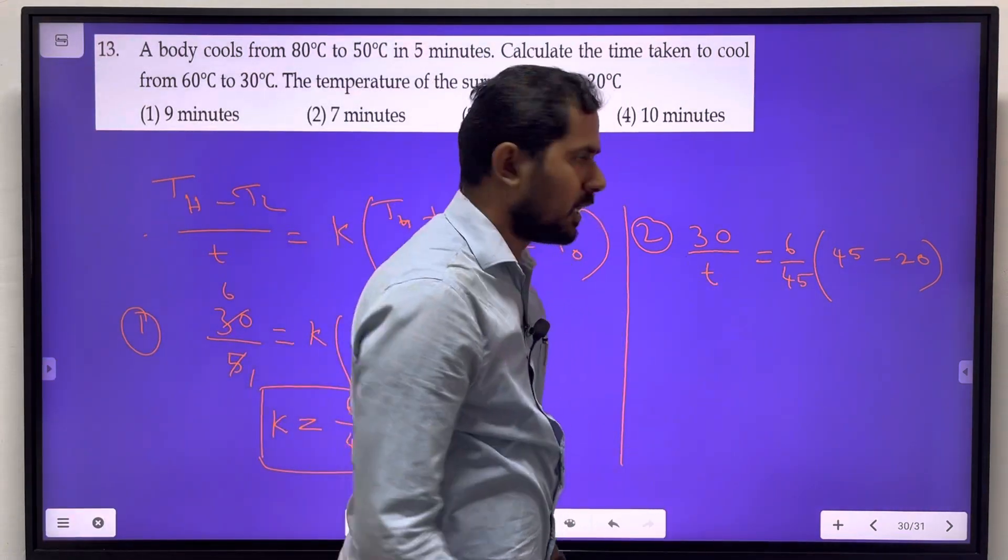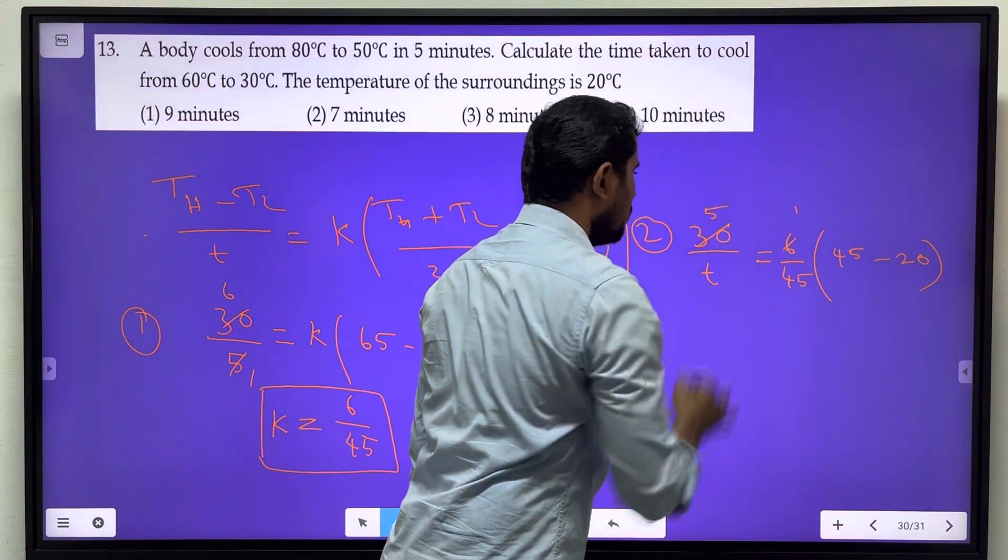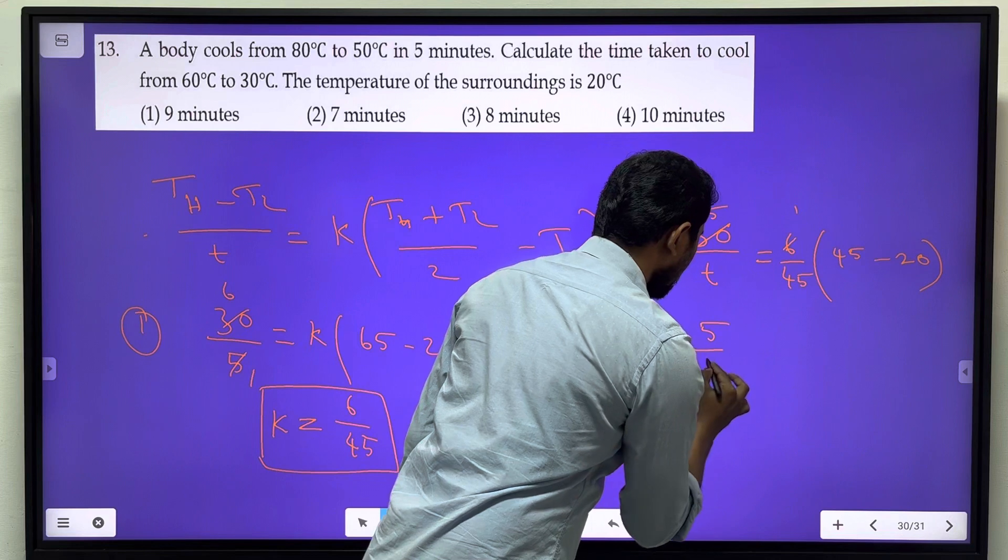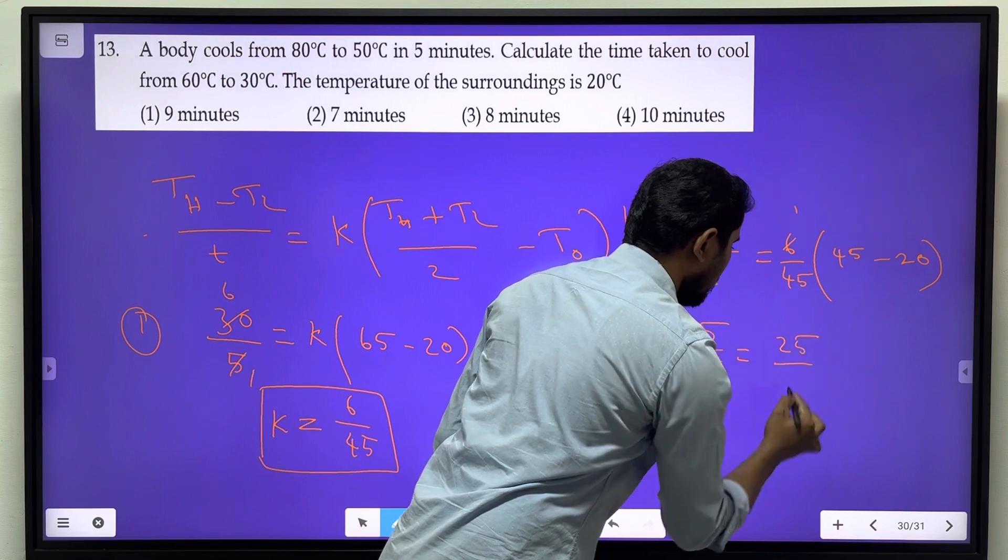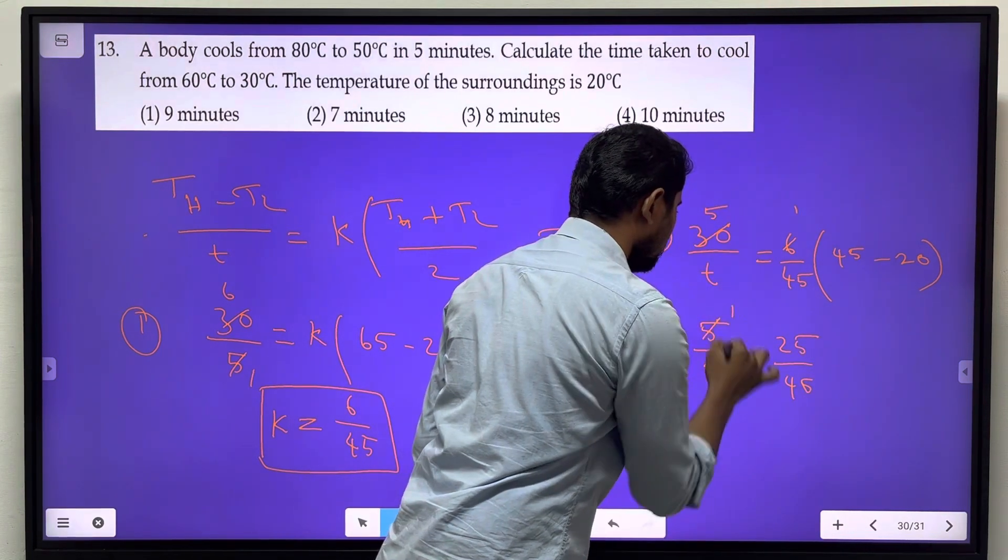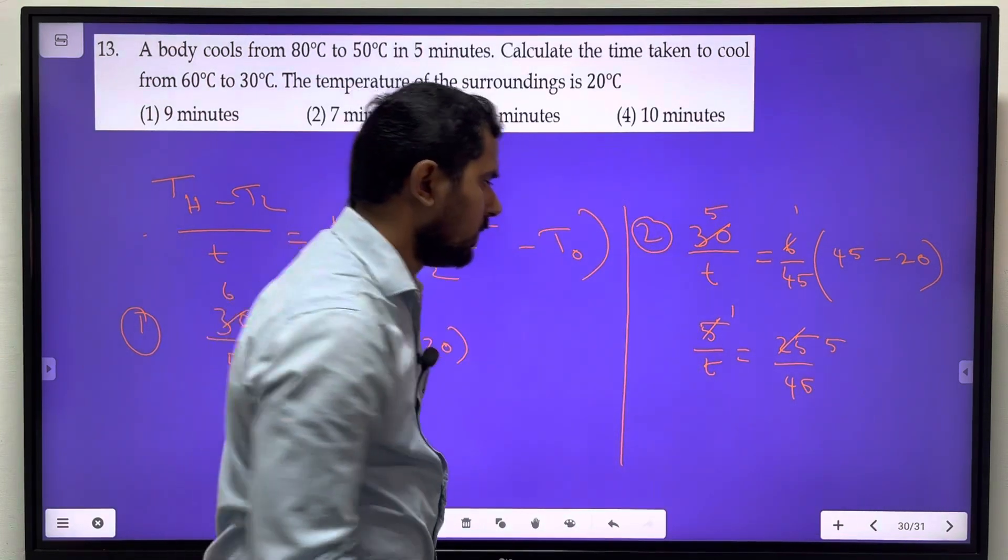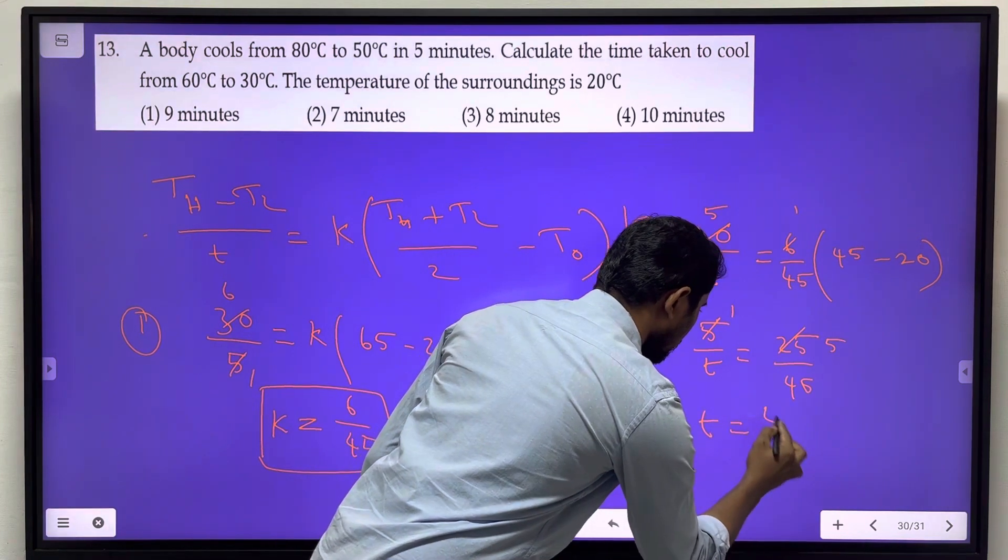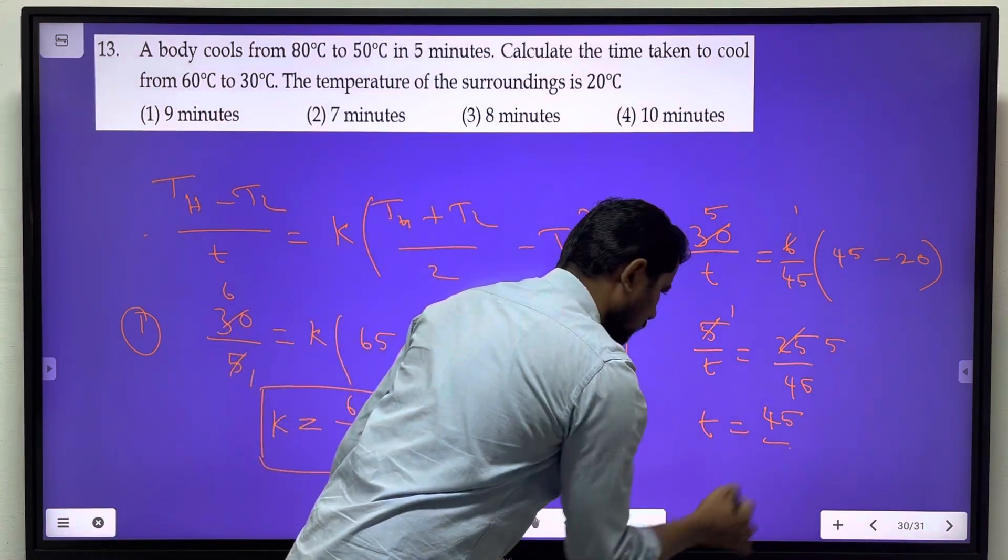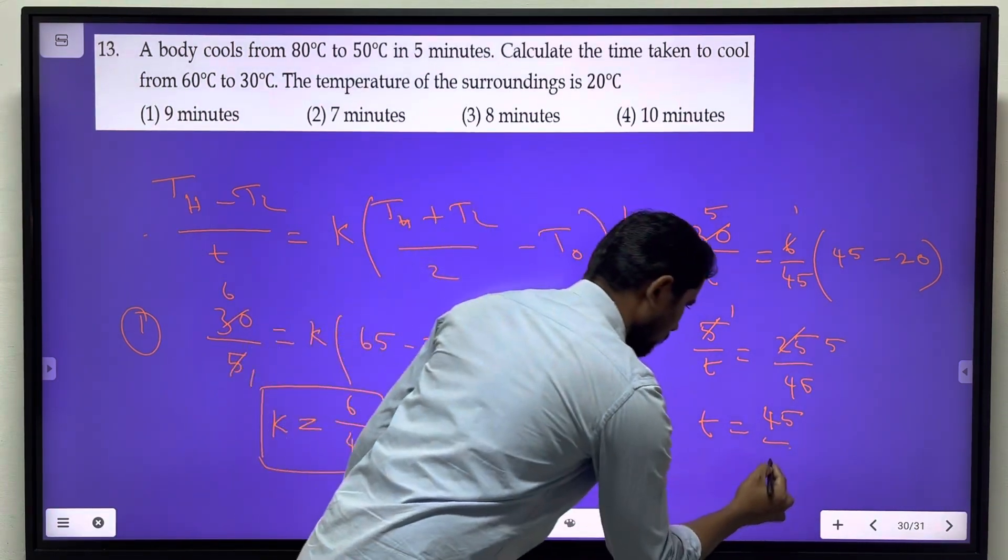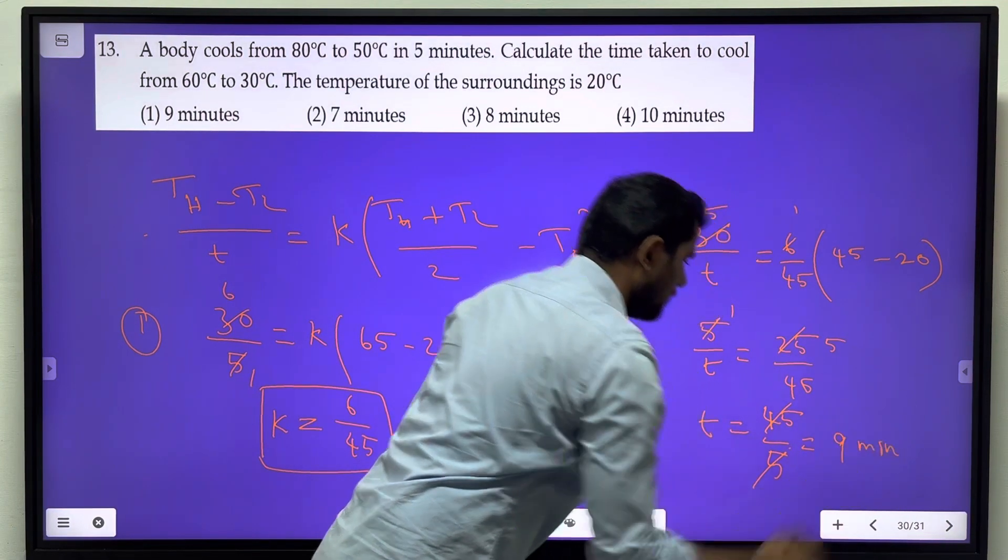So 30/T = (6/45) × 25. Solving for T, we get T = (30 × 45)/(6 × 25). If we cancel terms, we get 9 minutes.